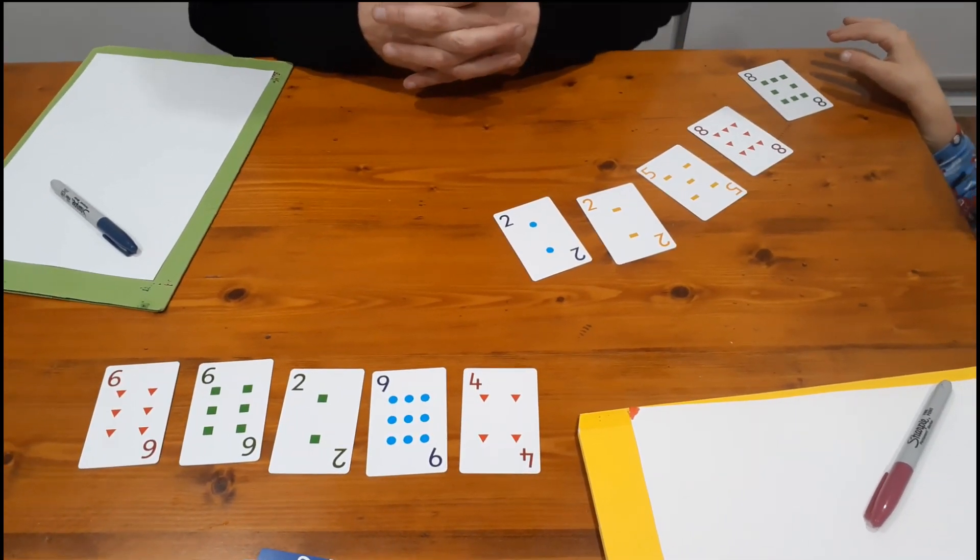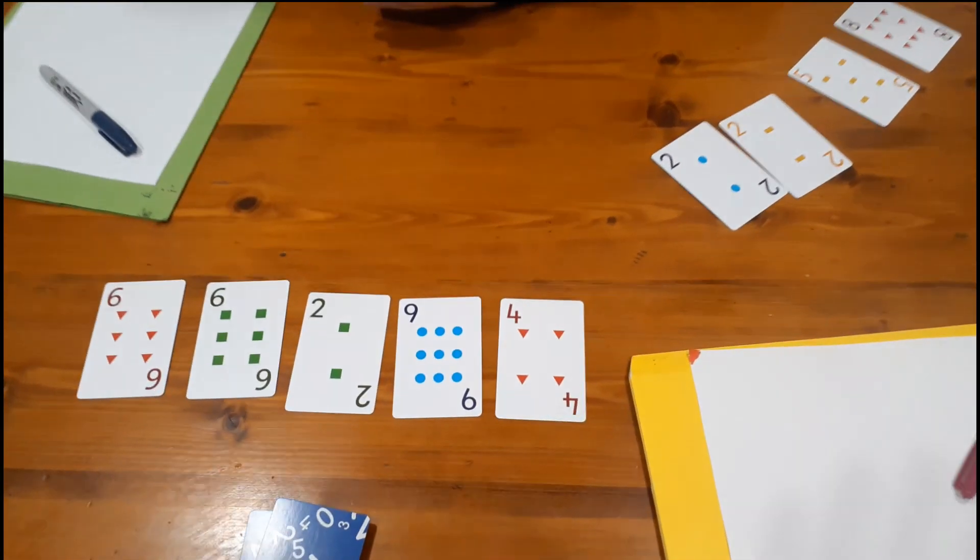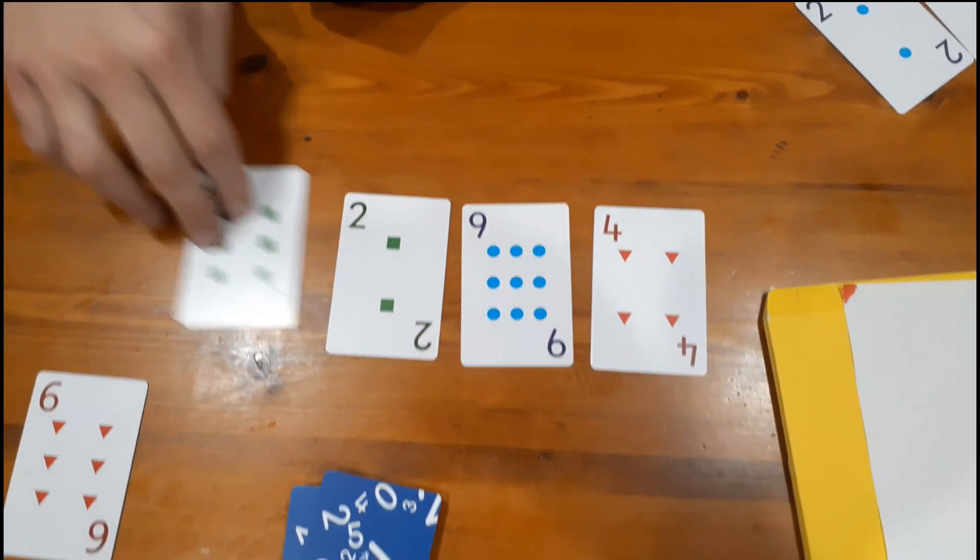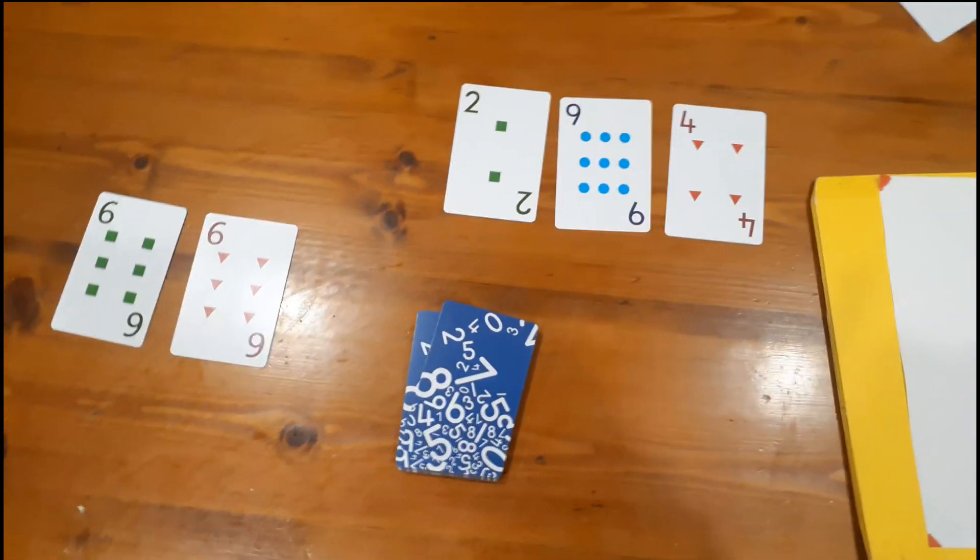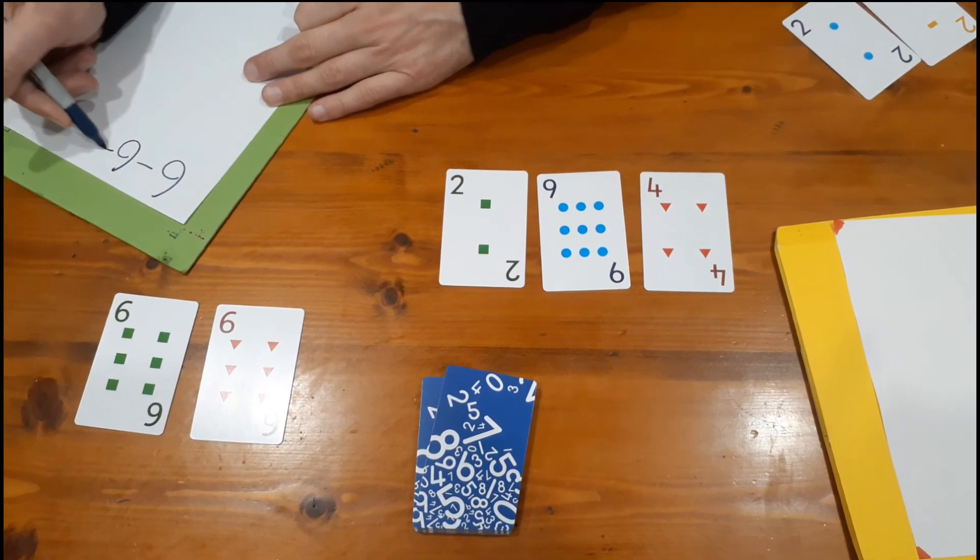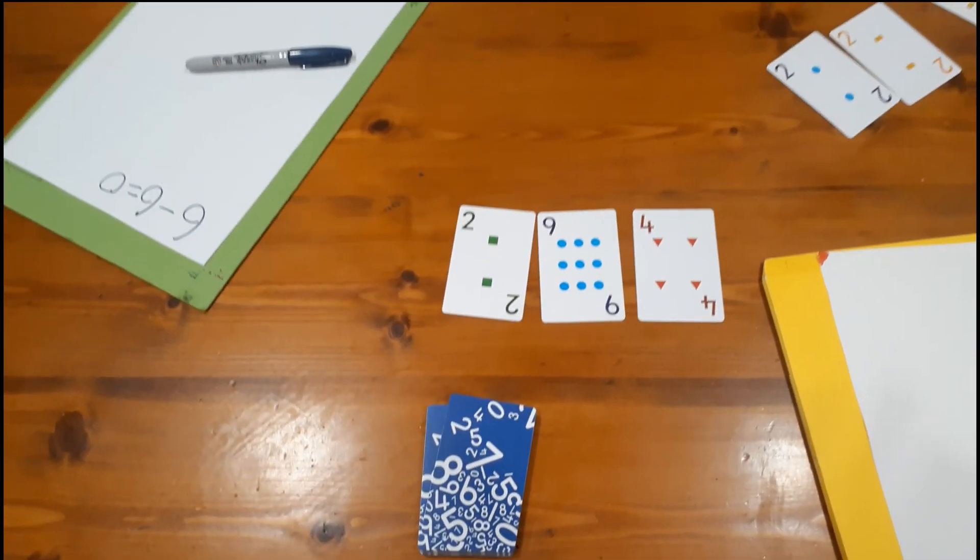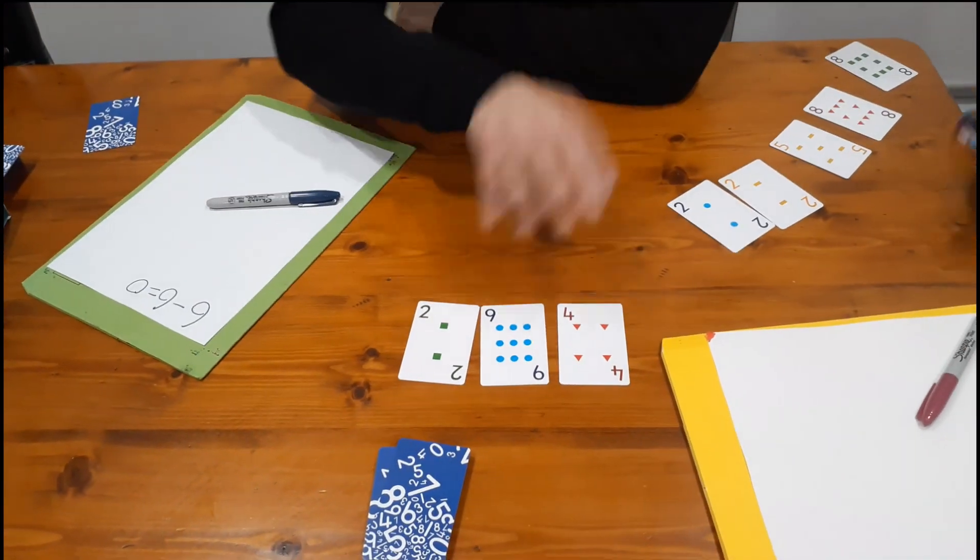So now, are you happy for me to go first? I'll give you some more thinking time. Okay, so I'm going to do a nice easy one. Six take away six equals zero. So then I would record that here. Six take away six equals zero. I bank these two cards. That's two points for me. And these three stay out here.